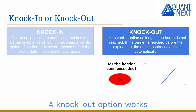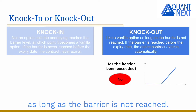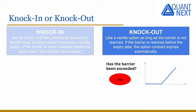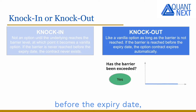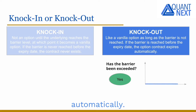A knock-out option works as a normal option as long as the barrier is not reached. But if the barrier is reached before the expiry date, the option contract expires automatically.